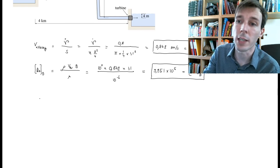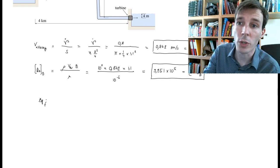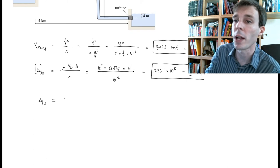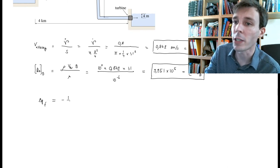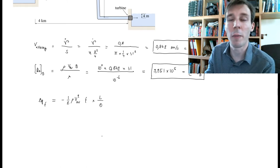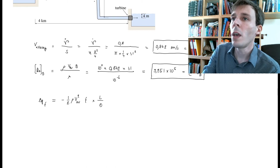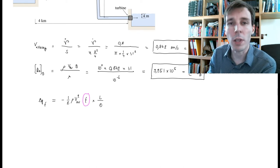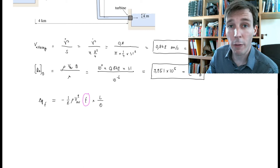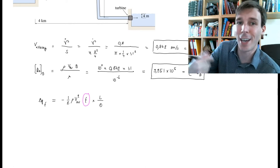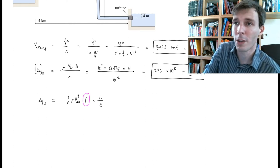We want to calculate the pressure loss due to friction, which we call ΔP_f. The convention in engineering is to quantify this using the Darcy-Weisbach formula: ΔP_loss = ½ ρ v_avg² · f · (L/d), where f is the friction factor and L and d are the length and diameter of the pipe. All terms are known except the friction factor.